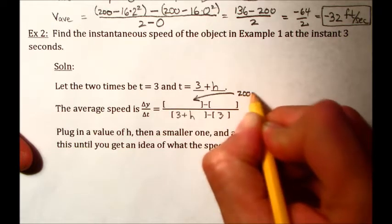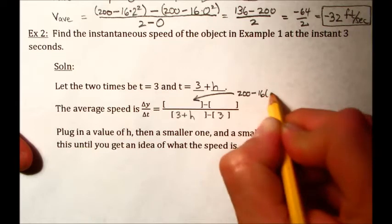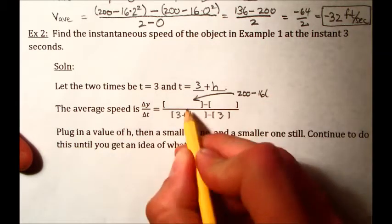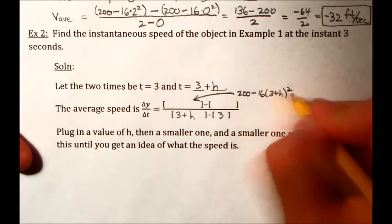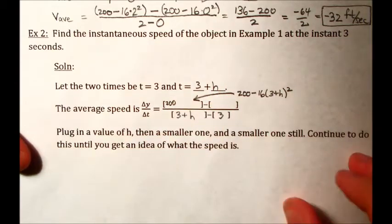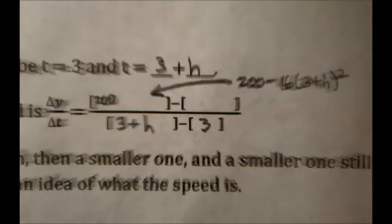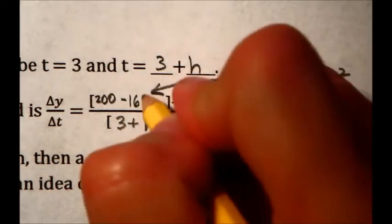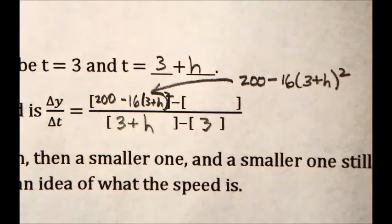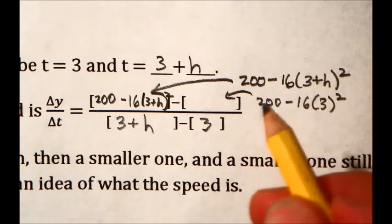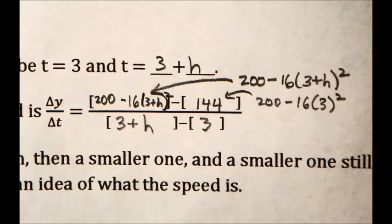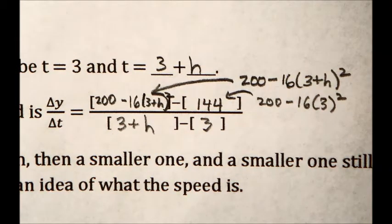So for the first one, it's going to be 200 minus and then 16. Now the time we're using here, the time we're using here is the three plus h from beneath it. So you put in the three plus h there. And that goes here. So I'm going to actually zoom in here. This is 200 minus and then 16, and then three plus h squared. And then this is just 200 minus 16 times three squared, which is 144. This is basically what's going to happen.